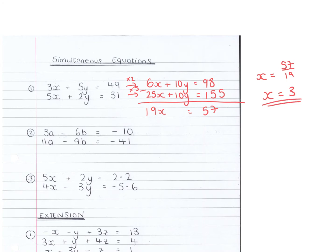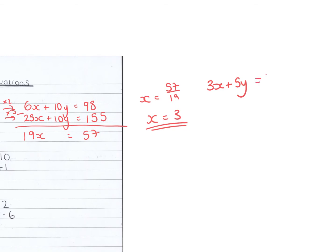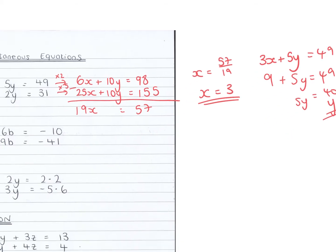And then I'm going to sub that into any one of the equations. I'm going to choose 3x plus 5y equals 49. So if x equals 3, 3x is 9, so we end up with 5y equals 40, y equals 8 for the first one.